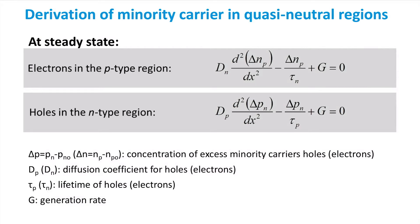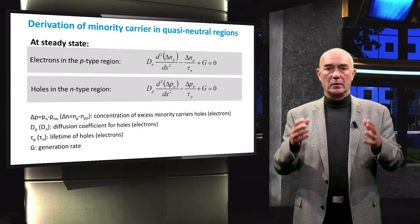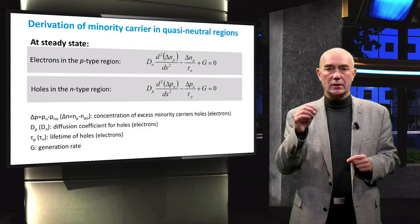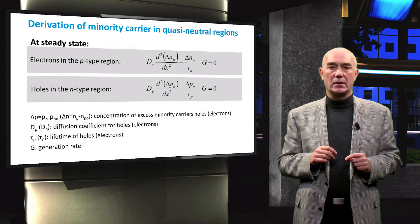In order to derive the distribution, we start with the continuity equation for electrons in the P-type region and holes in the N-type region. In quasi-neutral regions and at steady state, we can simplify the continuity equation for electrons and holes. We see that only the diffusion, recombination, and generation terms are present in the equations.